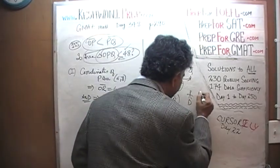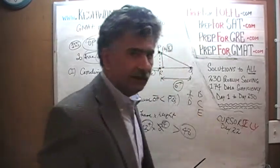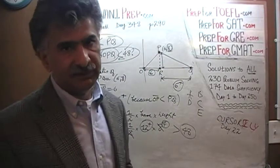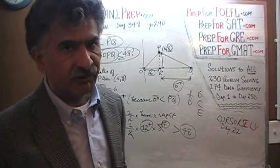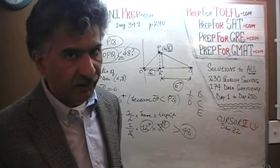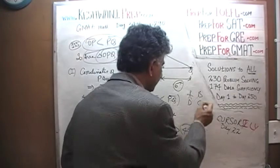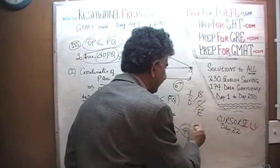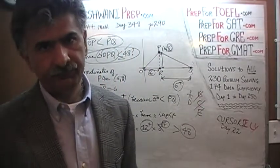In GMAT data sufficiency, the answer choices are A, D, B, C, E. Now that we have established the first statement by itself is enough, the answer cannot be B, C, or E. It would have to be either A or D.